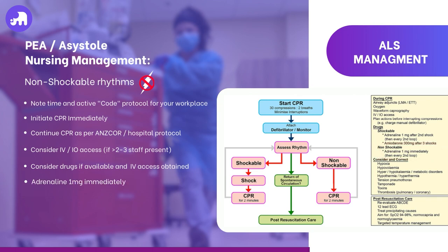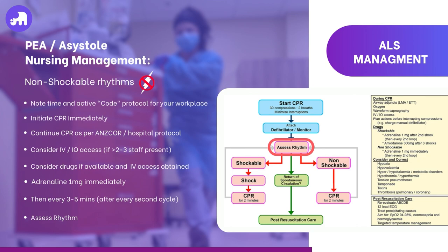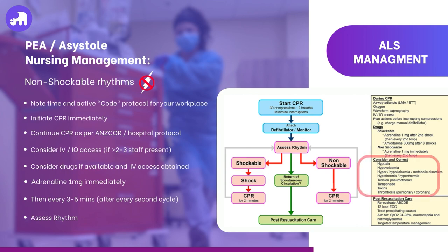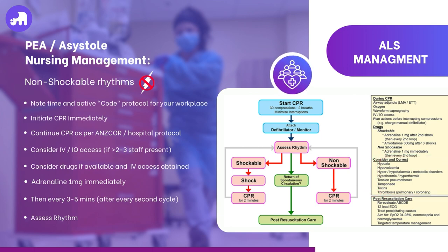According to the ANZCOR guidelines, one milligram of adrenaline can be administered as soon as IV or IO access is available, and then every three to five minutes or every second loop of CPR. After every two-minute cycle of CPR, quickly check the cardiac rhythm. If asystole persists, continue CPR. If a shockable rhythm appears, use the defibrillator as appropriate. Always consider potential reversible causes and treat them as identified — the common ones can be remembered by the acronym 4Hs and 4Ts. Continuously communicate with the resuscitation team, ensuring everyone is aware of interventions, rhythm checks and other vital steps, as these all need to be documented.